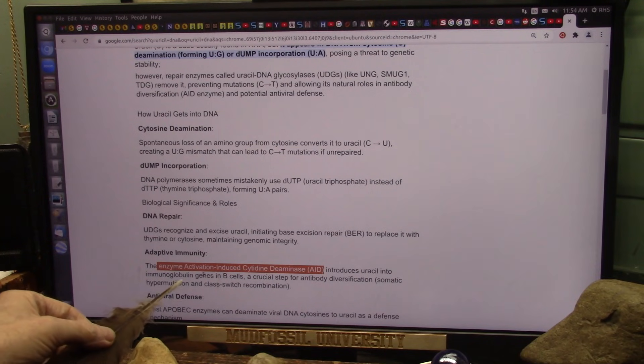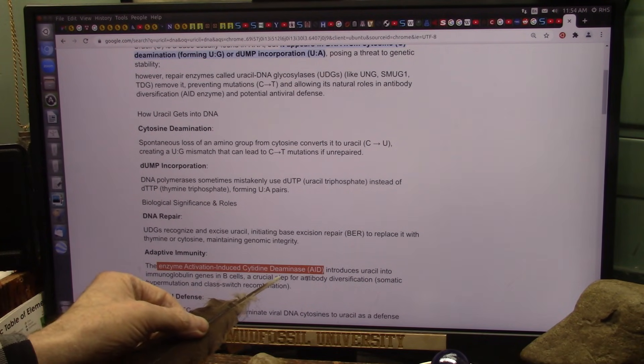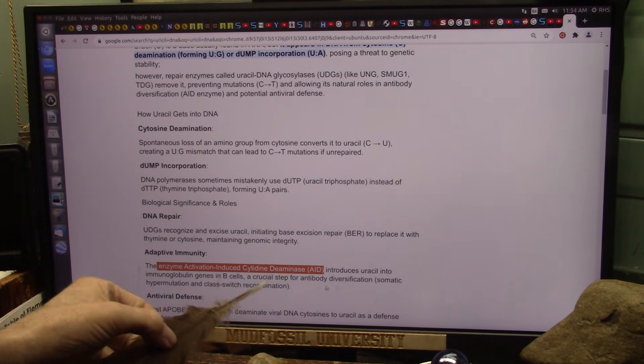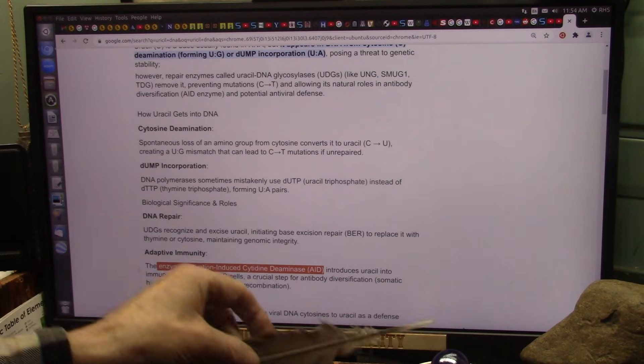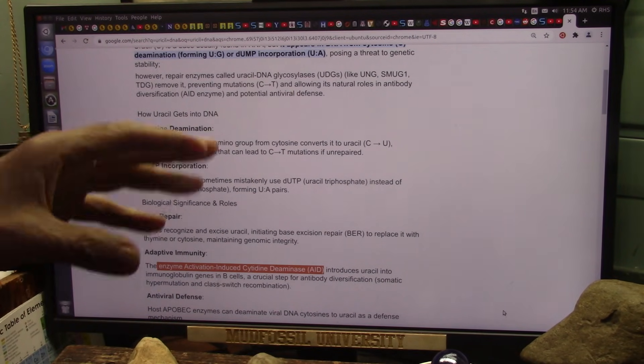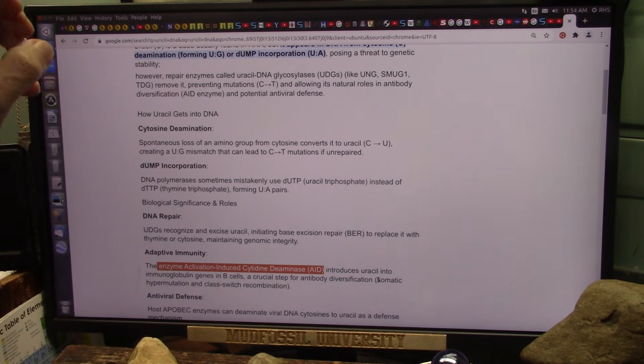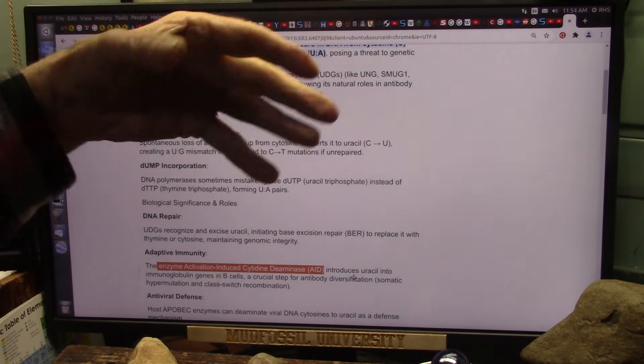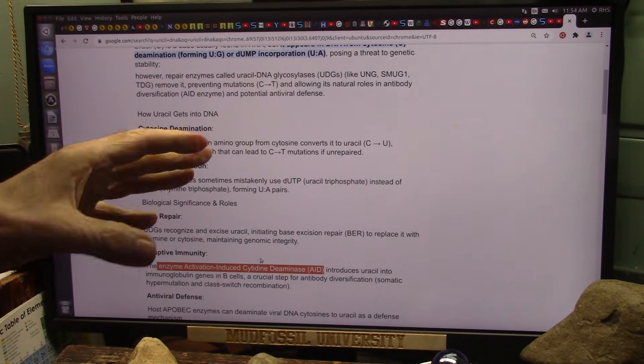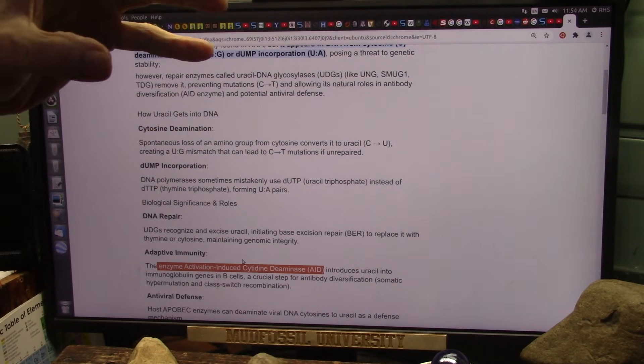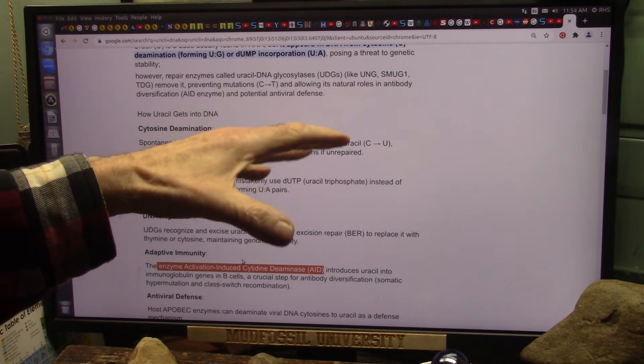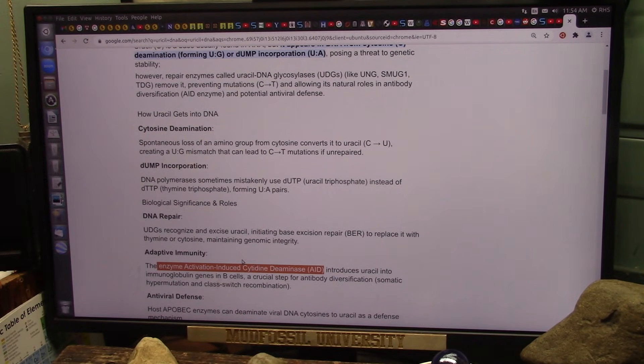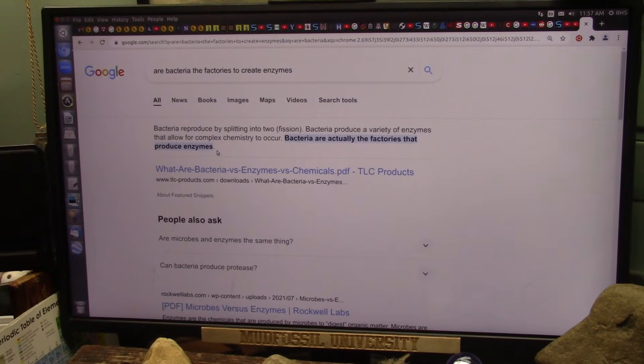If you don't have this particular enzyme, the enzyme activation aid introduces the uracil and you have to have that to fix your DNA. You don't have that, you're done. Or if you don't have enough of it, certain things are not going to get fixed. There's going to be issues, you're going to be almost like inflammation. Your body's going to be on fire trying to fix these things.